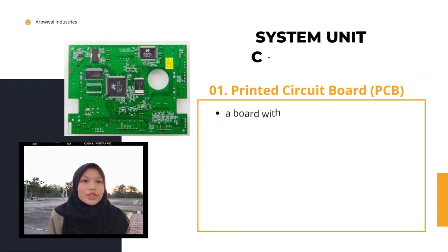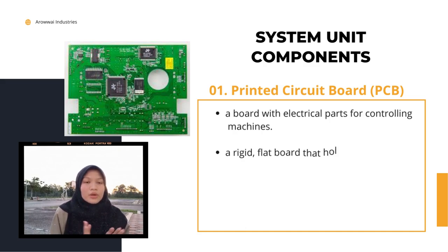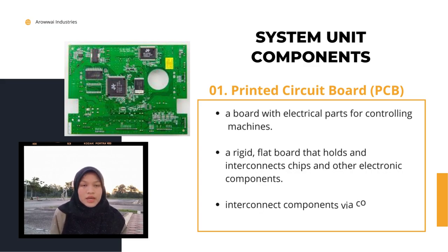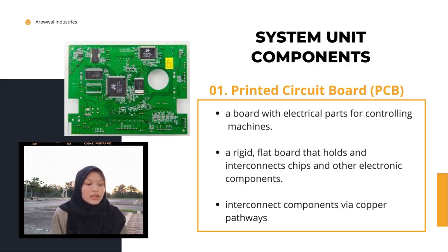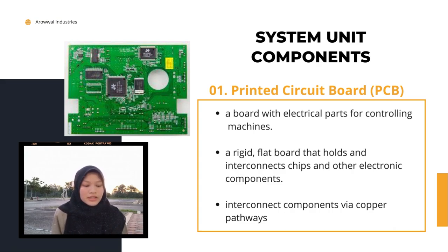Now let's proceed to the system unit component of a washing machine. A washing machine circuit board is actually a printed circuit board, also known as PCB. A PCB is a board with electrical parts for controlling the machine — a rigid, flat board that holds interconnected chips and other electronic components, connected via copper pathways etched into the board.